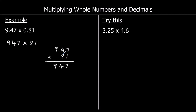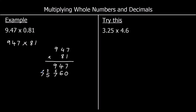Now multiplying by 80, not 8, so I add a zero first. 8 times 7 is 56 — the 6 goes in the tens and 5 carries to the hundreds. 8 times 4 is 32 plus 5 makes 37 — put 7 in the hundreds and carry 3 to the thousands. 8 times 9 is 72 plus 3 makes 75 — so 5 in the thousands and carry 7 to the ten-thousands.